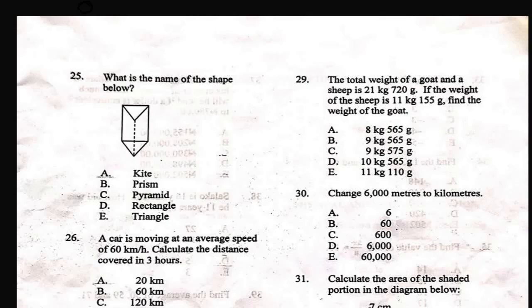Question 25 says: what is the name of the shape below? The right answer is a prism — it is not a triangle, rectangle, kite, or pyramid. A prism is a 3D shape where the top and bottom are the same. You can see for this shape, the top is a triangle and the bottom is a triangle as well. That is why prism is the correct answer.